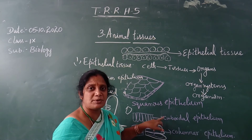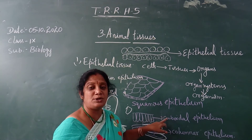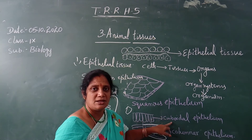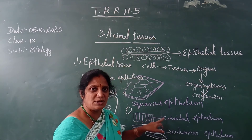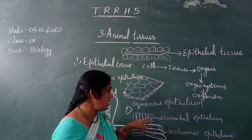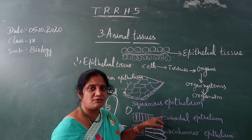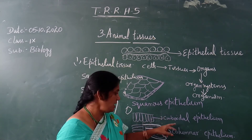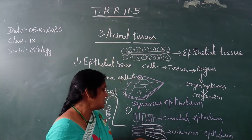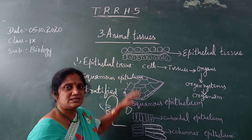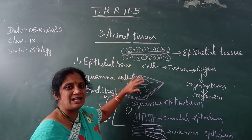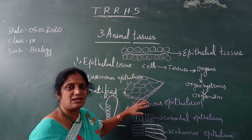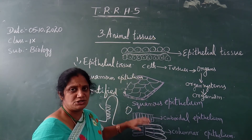Cuboidal epithelium is also present in the ureters, where absorption and secretion occur. So we have discussed different types of epithelial tissue: squamous, stratified, cuboidal, columnar, and glandular epithelium.